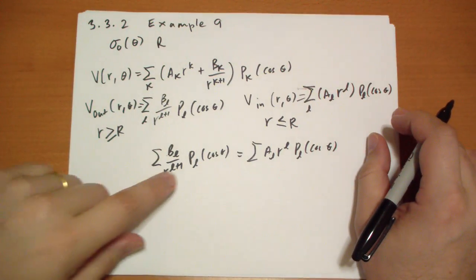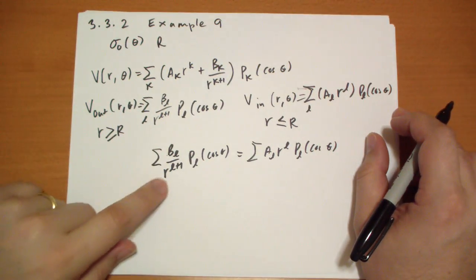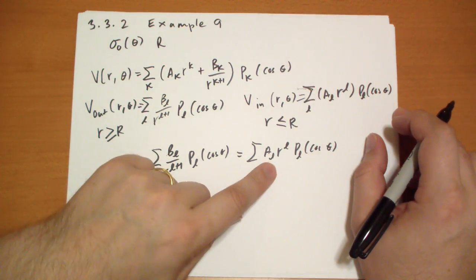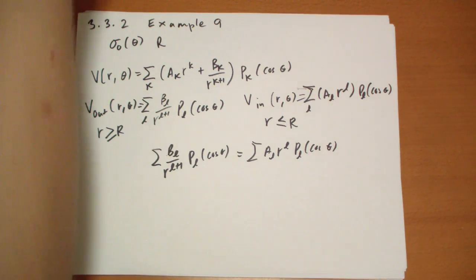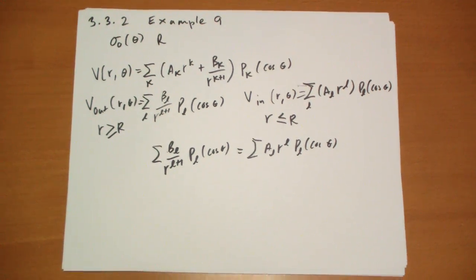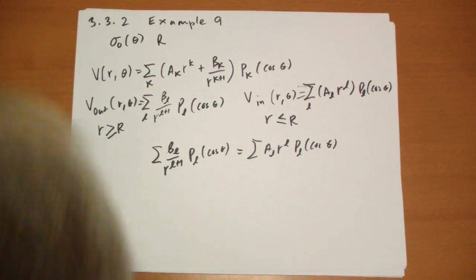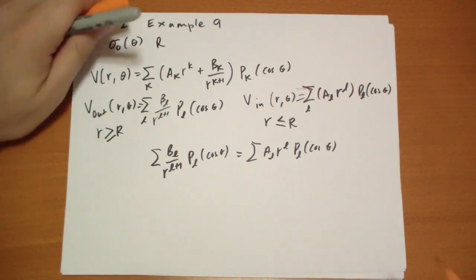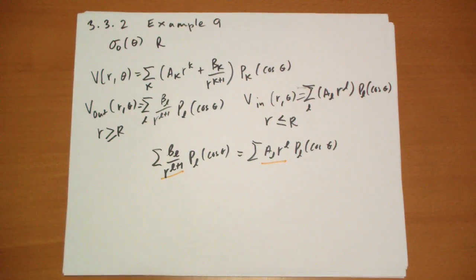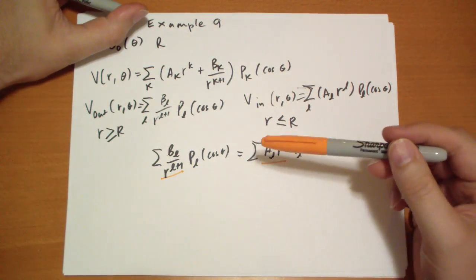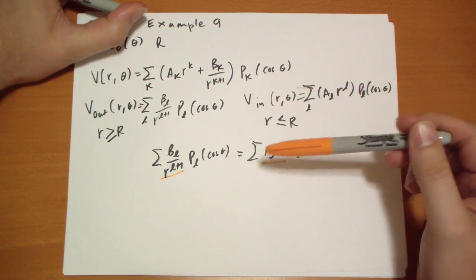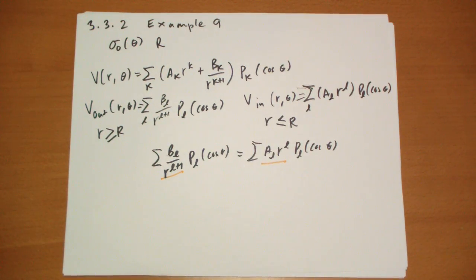Now if you wanted to, it should be obvious that B_L/R^(L+1) has to equal this term. But if you want to be more formal about it, you can do that trick. So those two have to be equal. And if you want to be more formal, what you can do is multiply by P_M(cos theta)*sin(theta) and then integrate from zero to pi for theta. The terms will drop out where it's equal to zero, otherwise they're going to both equal 2/(2N+1).